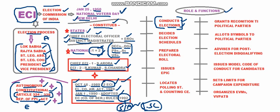ECI also decides election schedules for general elections and by-elections, specifying when and where they will be conducted. It also prepares the electoral roll, which lists all eligible voters along with their districts and constituencies under which they can vote.